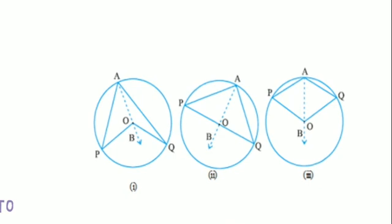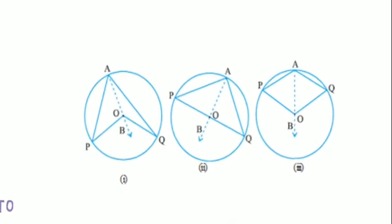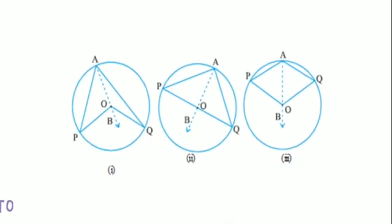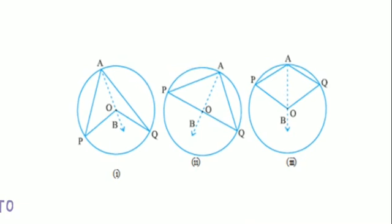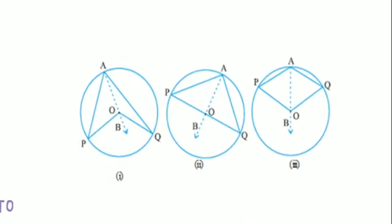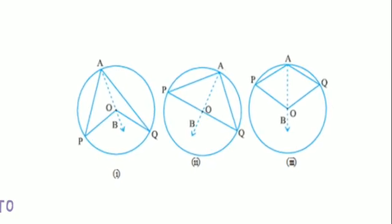You can write 'radii of the same circle'. In triangle OPA, OP is equal to OA, so angle OPA must be equal to angle OAP. Similarly in triangle OAQ, the same thing applies.